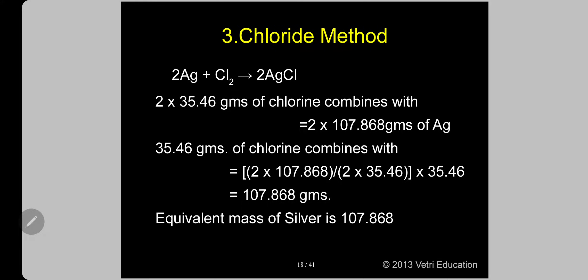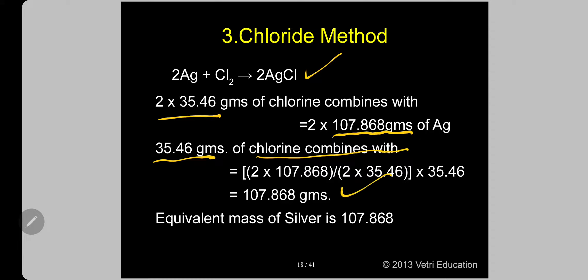The third method: chloride method. Silver is allowed to react with chlorine to form silver chloride. 2 moles of silver reacts with 1 mole of chlorine (2 × 35.46 grams of chlorine) combining with 2 × 107.868 grams of silver. The equivalent weight of silver = 107.868 ÷ 1 = 107.868. In this case, the atomic weight and equivalent weight of silver are identical because valency is 1.